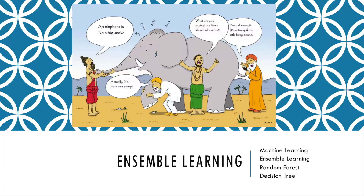Another man touched the tail and said you are wrong. It's actually like a rope. Different people describe the elephant as different things, but if we combine their descriptions together we can get a more accurate picture of an elephant. So this is ensemble learning.